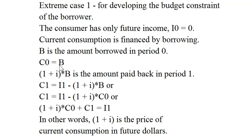C0 equals B. In period one you pay back the loan. You pay back the principal and the interest. So (1 + i)*B is the amount paid back in period one.